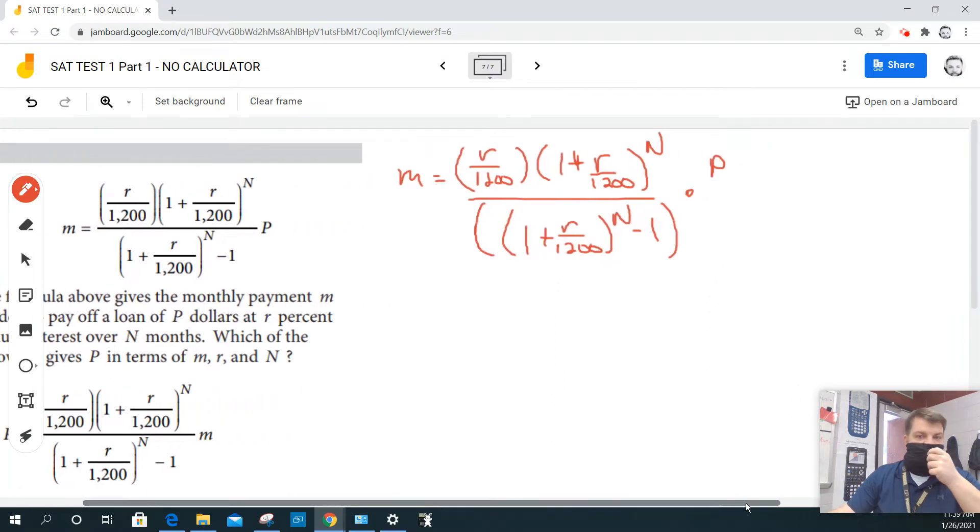Now this is a lot easier than you think. I have right here some fractions. All of this is just a big fraction. There's a lot of parentheses and stuff, but that's all going to be multiplied by P.